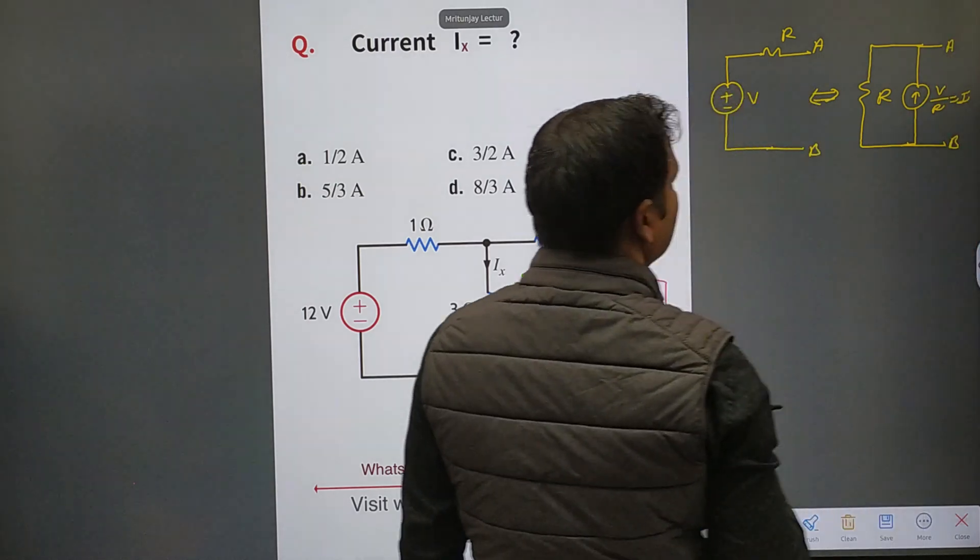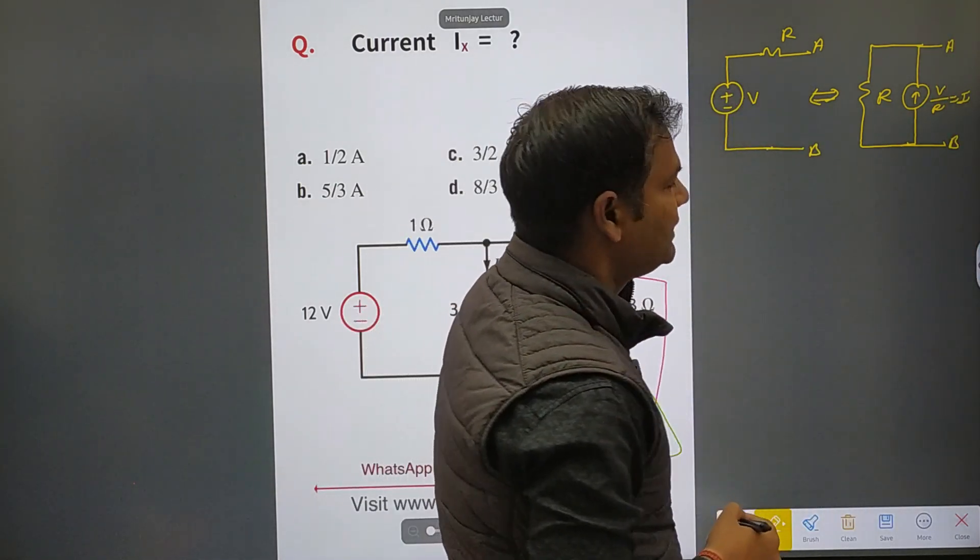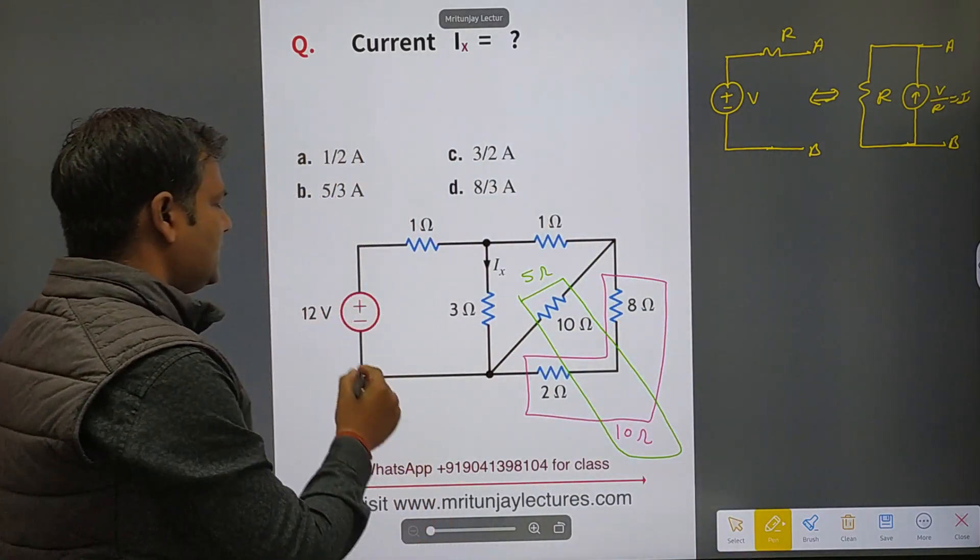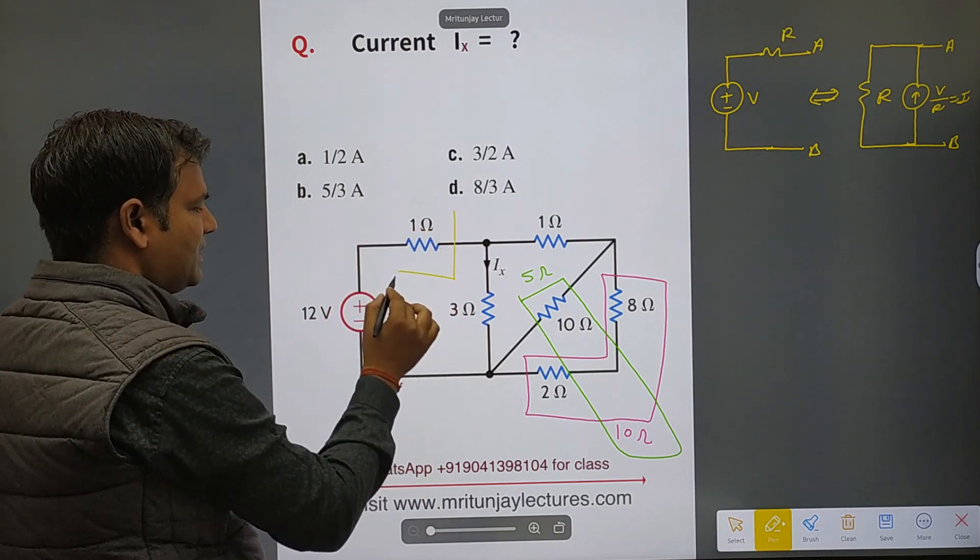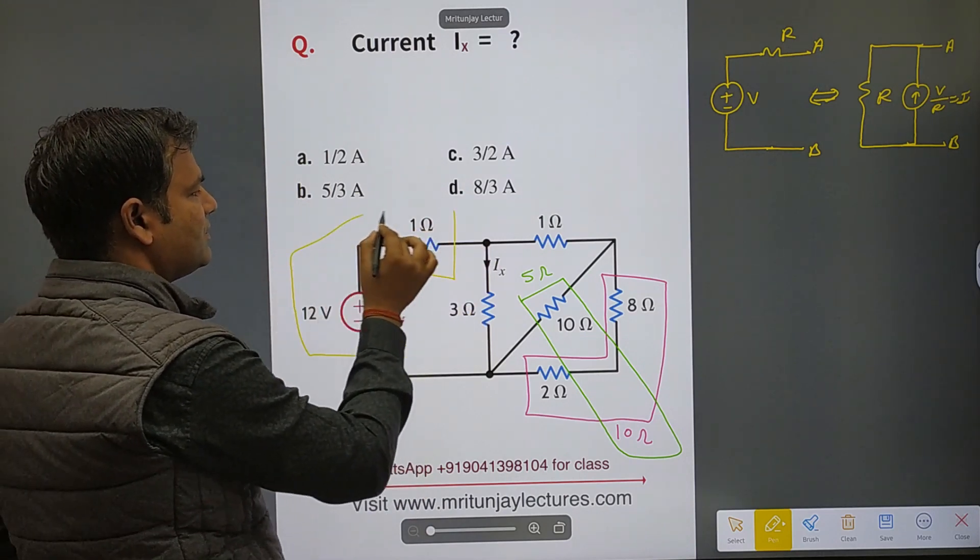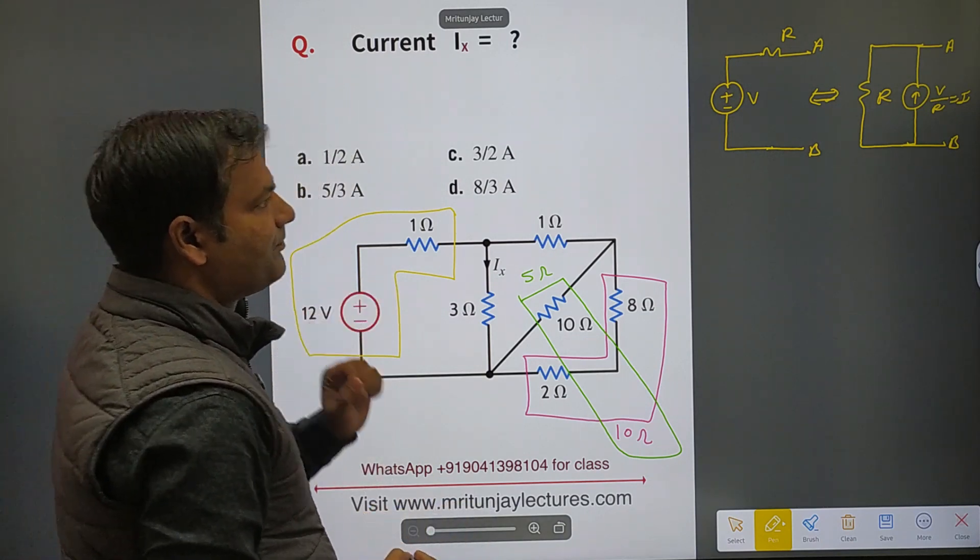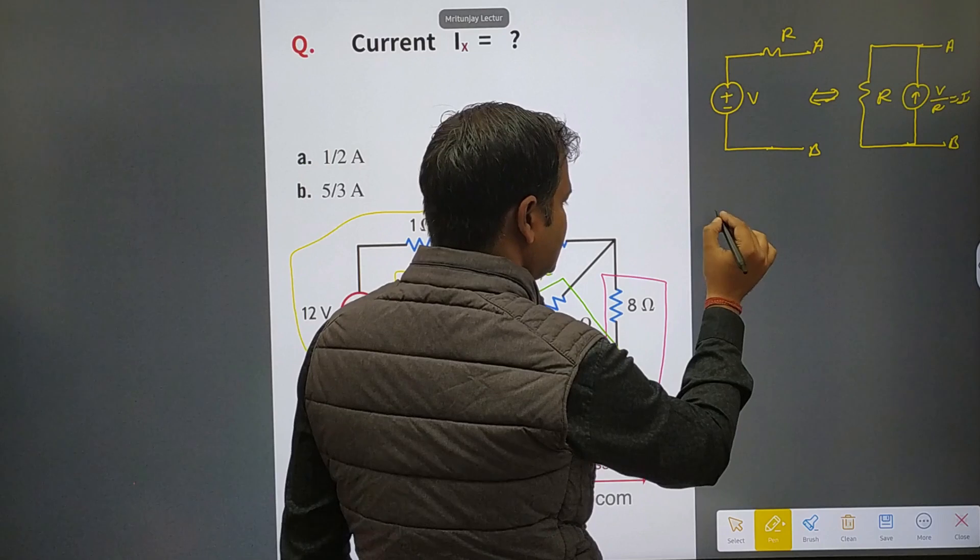Using source transformation, how can we convert this one? Apply source transformation. Then we got 12 divided by 1, 12 divided by 1, that is how much? 12 amperes.